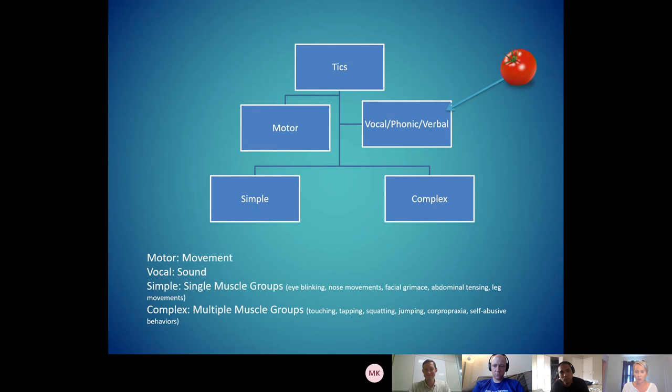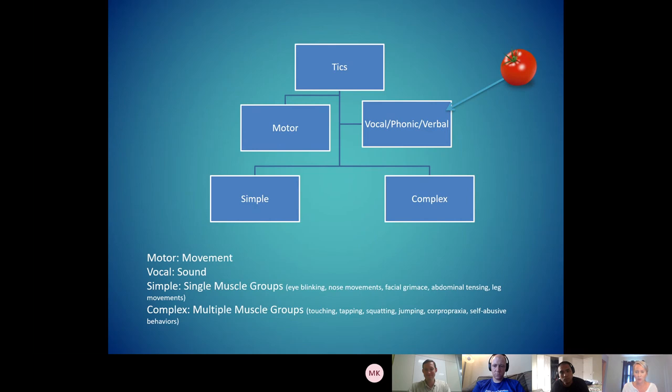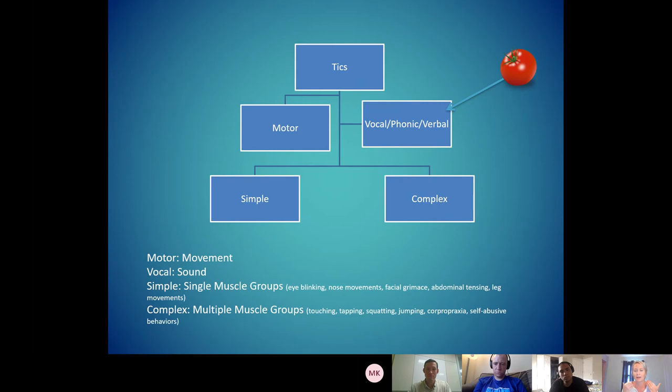We have this phenomena of tics, and then we have motor tics, and then what's called vocal, phonic, or verbal tics — those words are often used interchangeably. Within motor and vocal tics, we have simple tics and complex tics. Simple tics involve a single muscle group or a single sound. Complex is when we have a series of tics together — so maybe it's a facial grimace, a blink, and then a throat clear.